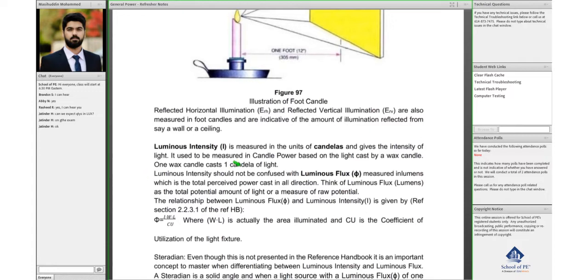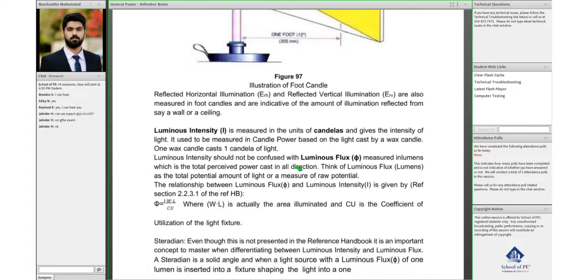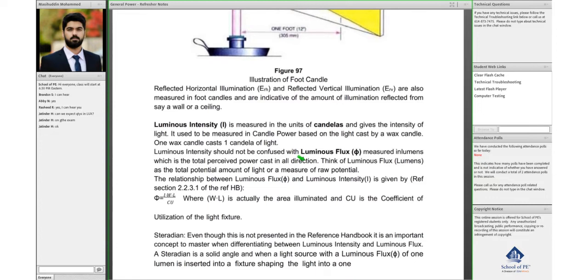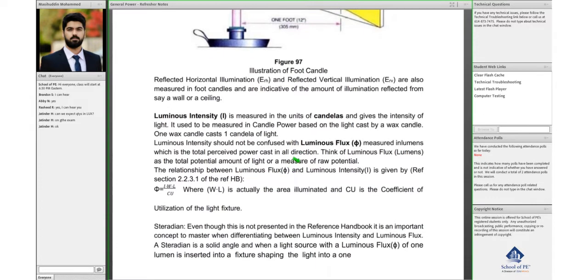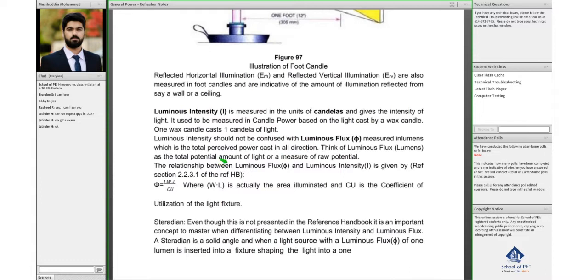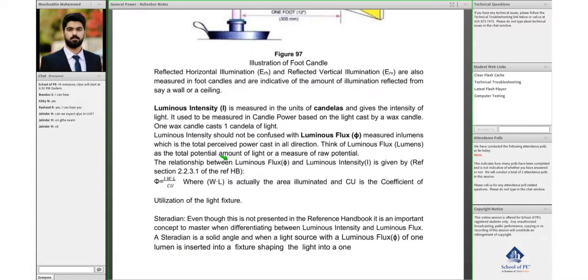Luminous intensity is the intensity of light, and luminous flux is basically the perceived power cast in all directions. It could be the potential that an amount of light has.